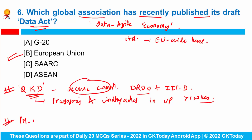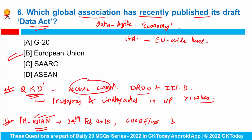The Pradhan Mantri Kisan Samman Nidhi Scheme was launched on 24th February 2019 to provide income support to all landholder farmer families. Under this scheme, an amount of 6,000 rupees per year is transferred in three equal installments of 2,000 rupees directly into the bank accounts of farmers. Over 1.8 lakh crore rupees have been transferred directly under this scheme.